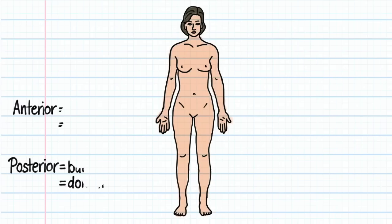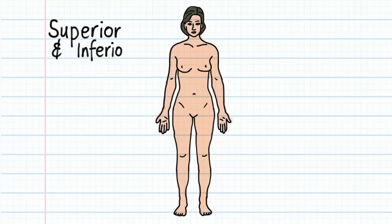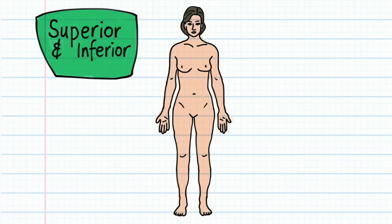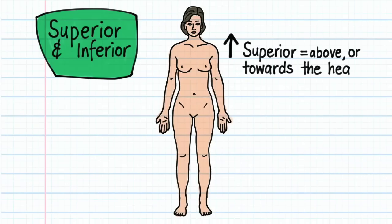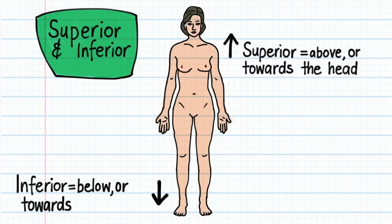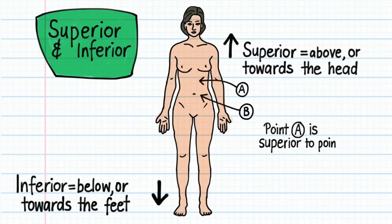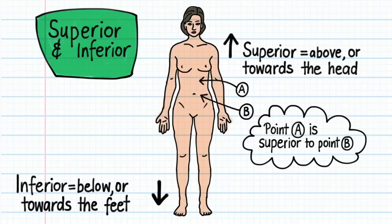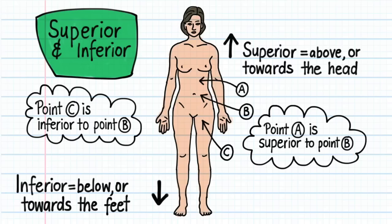Next are the terms superior and inferior. Superior means above or towards the head. Inferior means below or towards the feet. For example, on this drawing, point A is superior to point B. However, point C is inferior to point B.